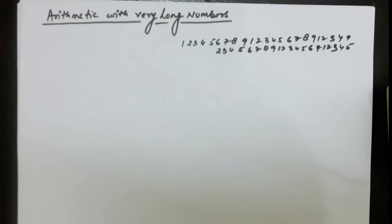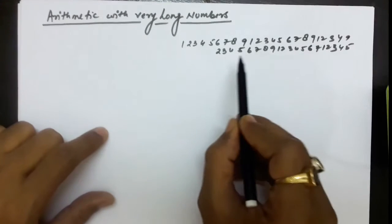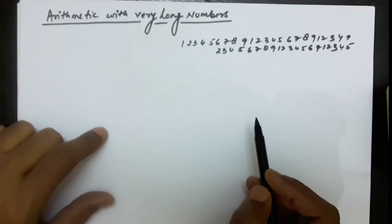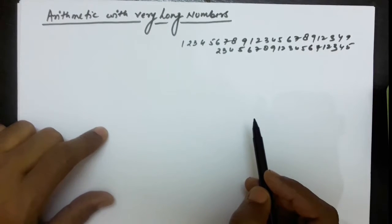Hello everyone. In this lecture we will discuss arithmetic with very long numbers. Suppose you have two very long numbers. These two numbers are so long that addition will not be possible by storing these numbers in integer or long variables if you are doing programming in C. So we will have to think about some other mechanism by which this addition can be performed.